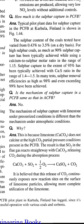For high sulfur coals, as much as 90% sulfur capture has been typically achieved while using a calcium to sulfur molar ratio in the range of 1 to 1.5. Sulfur capture to 95% has been typically achieved with a calcium to sulfur ratio in the range of 1.4 to 1.5. In many tests, sulfur removal efficiency as high as 98% and even exceeding 99% has been achieved.